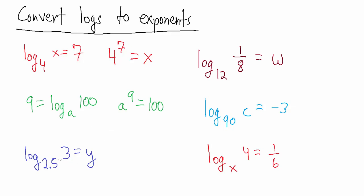The base 2.5 log of the number 3 is y. Having 2.5 as a base is a little unusual, but it's totally legitimate. So 2.5 is our base. The base 2.5 log of 3 is y, meaning y is the exponent. So 2.5 to the y equals 3 — 3 is all that's left over. Remember, a logarithm is just a fancy way of describing exponents, so the base 2.5 log corresponds to the base 2.5 exponent, and 3 goes on the other side.